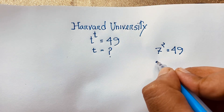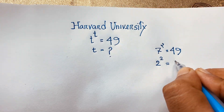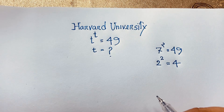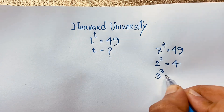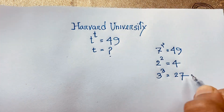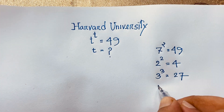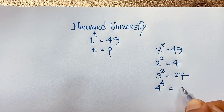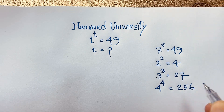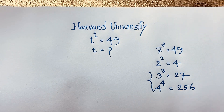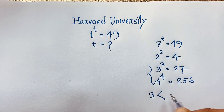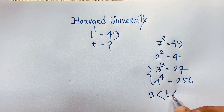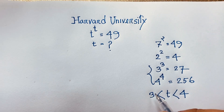At this moment, you can easily see: 2 to the power 2 is 4, 3 to the power 3 is 27, and 4 to the power 4 is 256. So you can see that t is between 3 and 4 — t will be greater than 3 and less than 4.